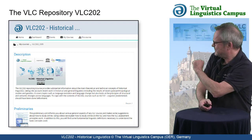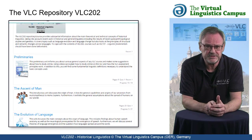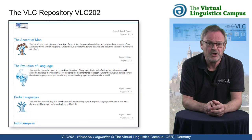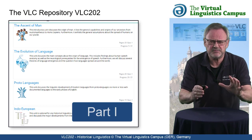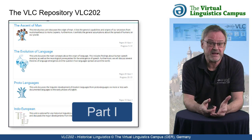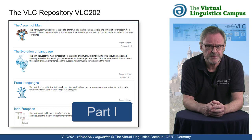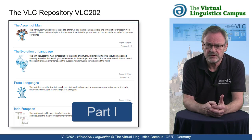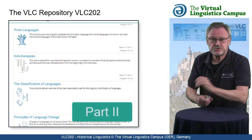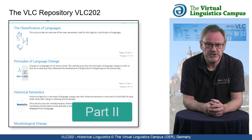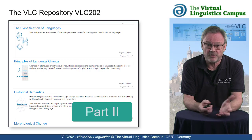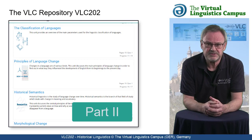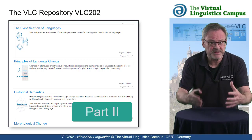Here are the current content units of VLC 202. The first part goes way back in time and discusses the origin of man and the evolution of language. It shows how former languages can be reconstructed and takes a special look at Indo-European. Part 2 is truly linguistic in character — it shows how languages can be classified, how they change, and discusses and exemplifies the various types of change from phonology to semantics.